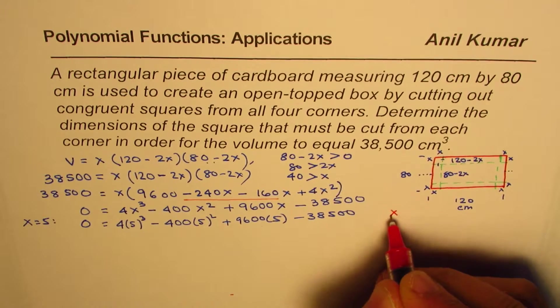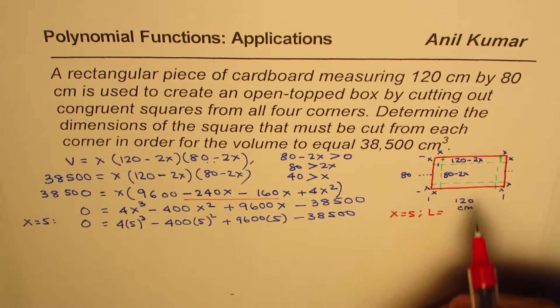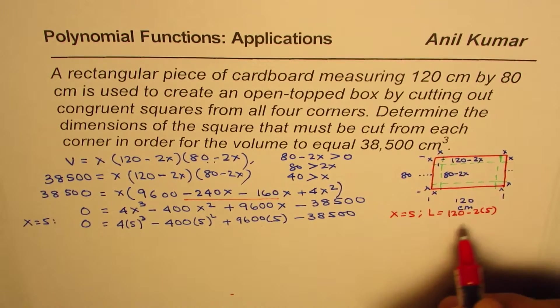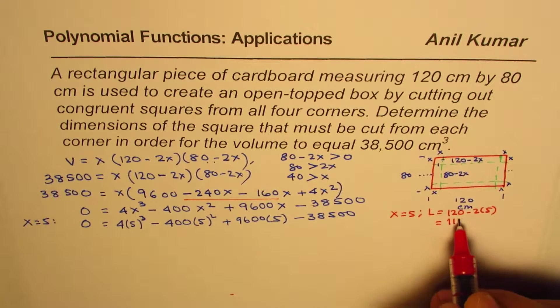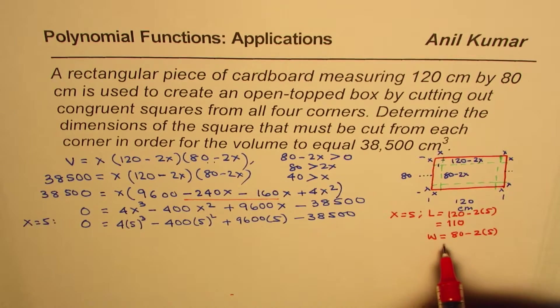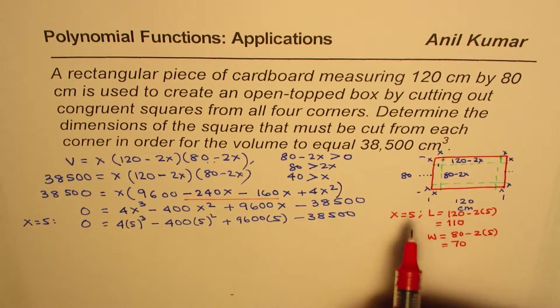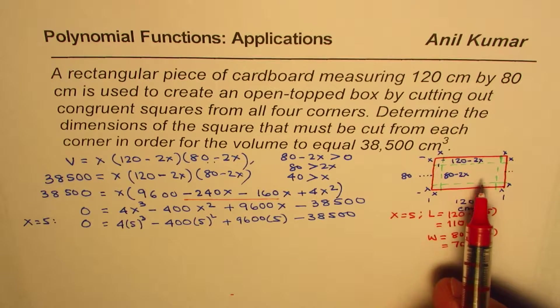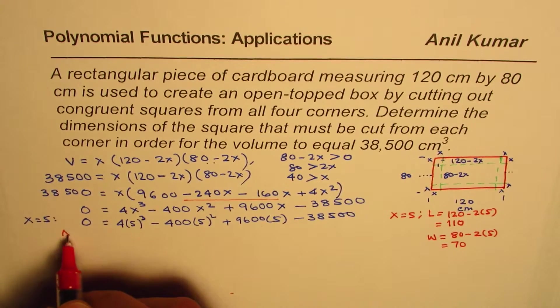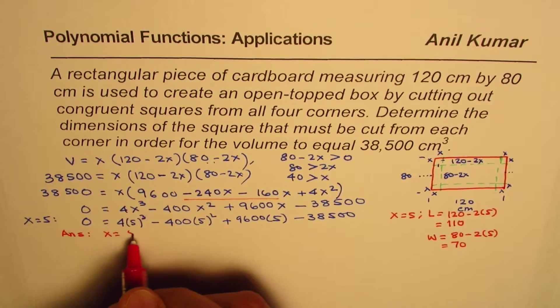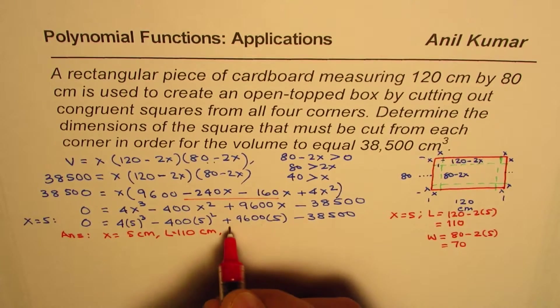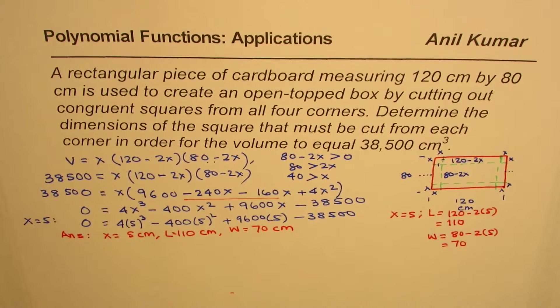And if I write X equals to 5, we can find what length is. Length will be equals to 120 minus 2X. Length is 120 minus 2 times 5, and that is equals to 2 times 5 is 10, is 110. And the width is equals to 80 minus 2 times 5. So 80 minus 10, which is 70. So we have one set of dimensions for a rectangular open box, whose volume is going to be 38,500. So we have one set of answers, and we'll write our answer is X equals to 5 centimeters. The length of that box will be 110 centimeters, and width will be 70 centimeters. So that is definitely one of the answers.